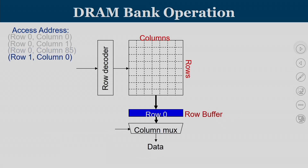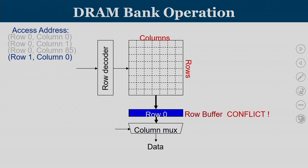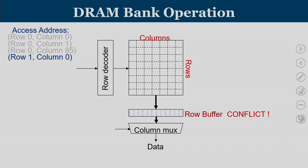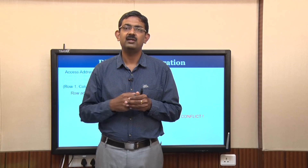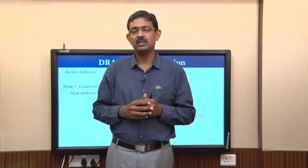When the CPU gives row 1 column 0, the row in the row buffer is different from the incoming row address. This is known as a row buffer conflict — the requested row is different from the existing row in the row buffer. In this case the row buffer value must be stored back through precharge. The contents of row 0 in the row buffer are transferred back into the corresponding row, since at activation the capacitors no longer hold data — only the row buffer has it.